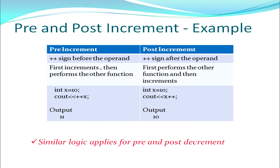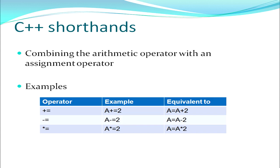For example, with x equal to 10, if I say cout << ++x (pre-increment), first the increment happens and then the display, so the output is 11. In the post-increment case, cout << x++, first the value is displayed and then incremented, so the output is 10. The same logic applies for decrement operations. We also have shorthands in C++ where the arithmetic operator is combined with the assignment operator. These shorthands can be used with any of the arithmetic operators including division and modulo.